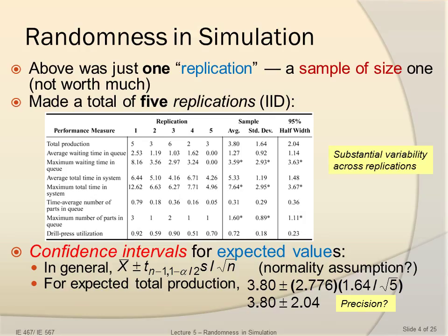Suppose it's okay for total production. For expected total production at 95% precision, we plug in the sample average x-bar, which from the table is 3.8. We plug in the t value with n minus 1 degrees of freedom (n = 5, so df = 4), giving t = 2.776. We multiply by s = 1.64 and divide by the square root of n = 5. That gives us an interval of 3.8 ± 2.04, with a lower value of 3.8 − 2.04 and an upper value of 3.8 + 2.04.